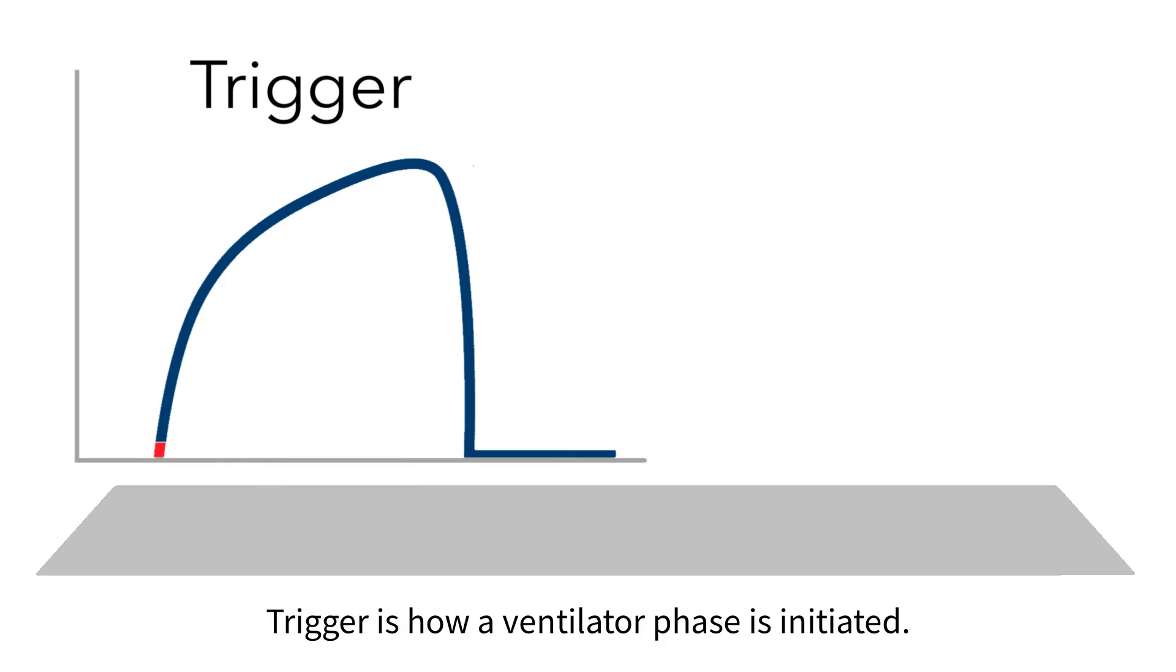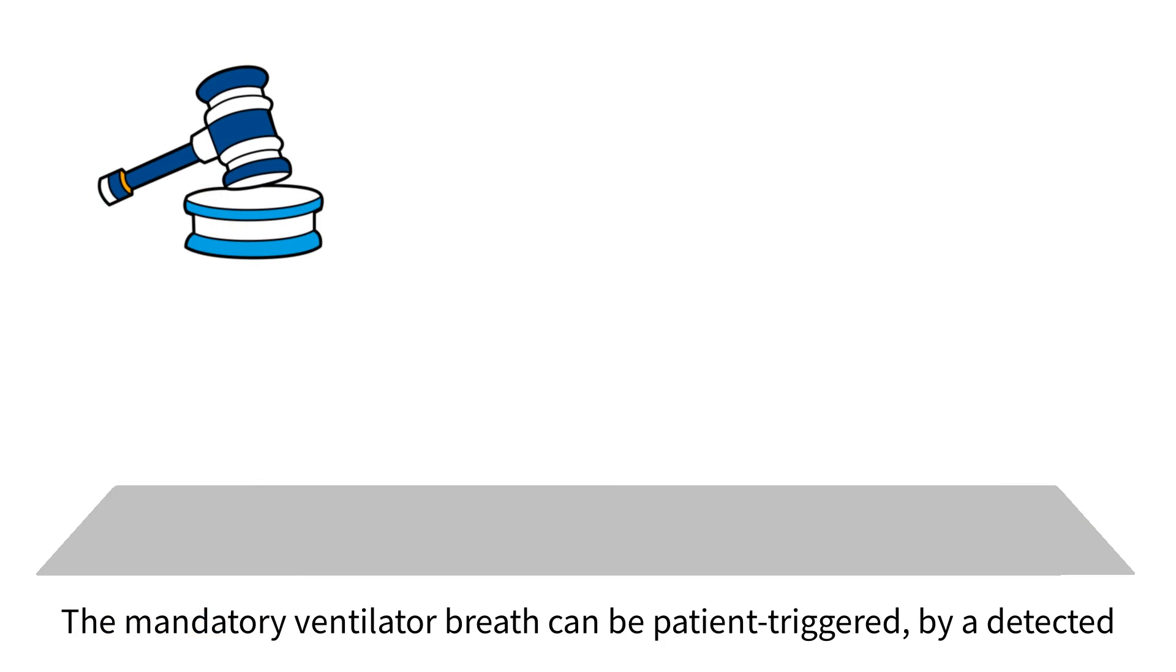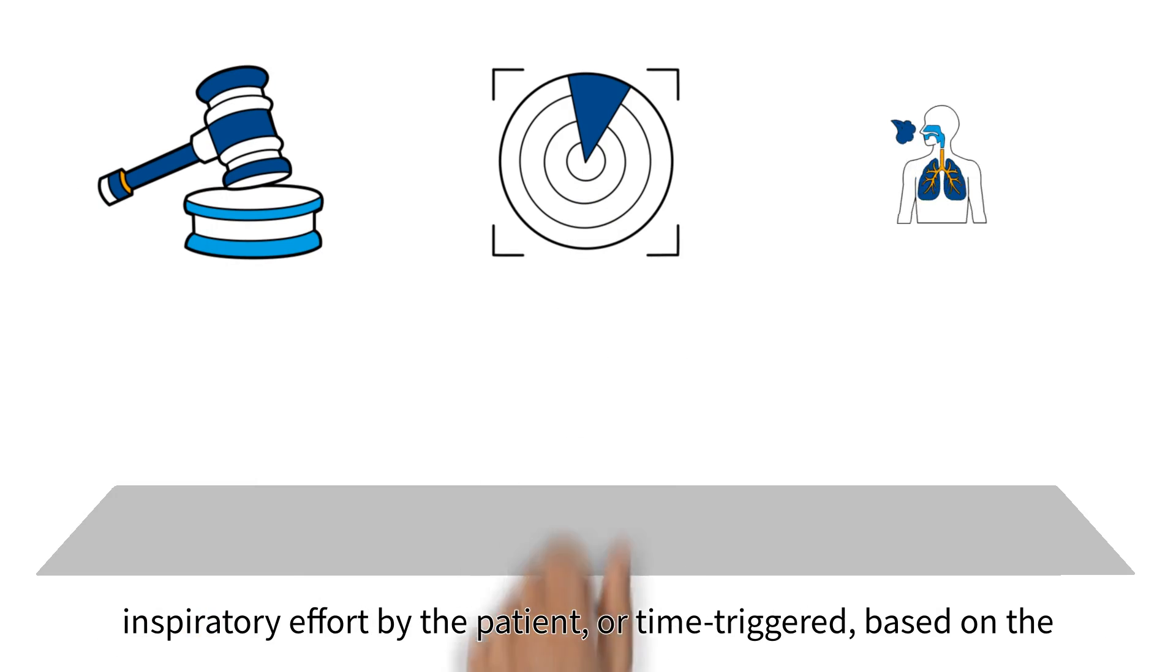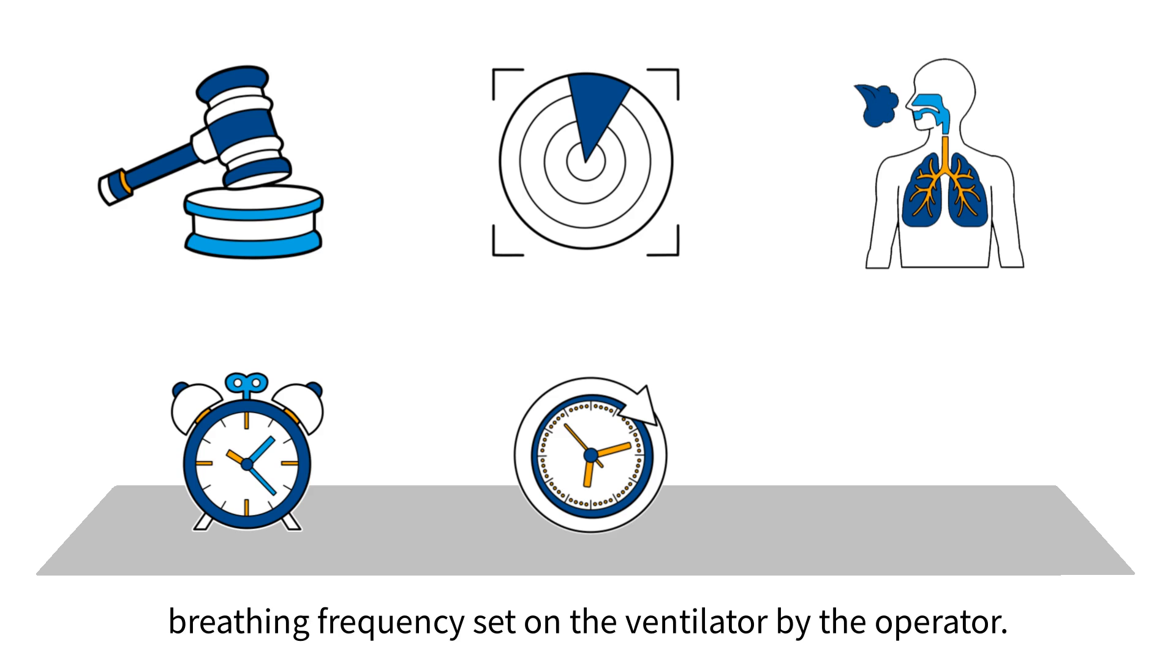Trigger is how a ventilator phase is initiated. The mandatory ventilator breath can be patient triggered by a detected inspiratory effort by the patient, or time triggered based on the breathing frequency set on the ventilator by the operator.